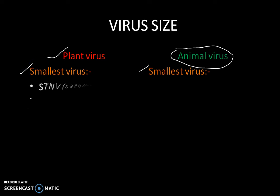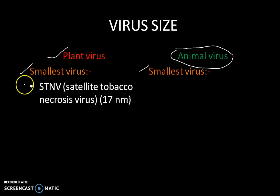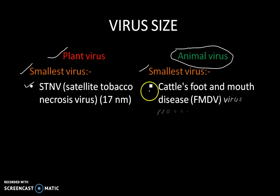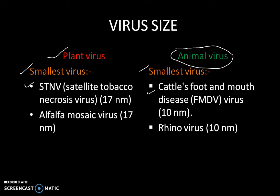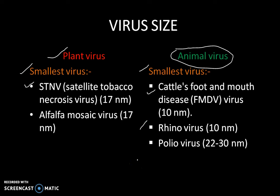The smallest plant virus is the satellite tobacco necrosis virus, and the smallest animal virus is the cattle foot-and-mouth disease virus. Again among smallest plant viruses we have the alfalfa mosaic virus, and among smallest animal viruses we have the rhinovirus and also the poliovirus.